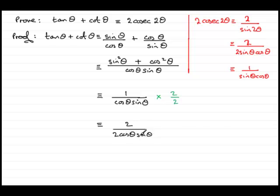Now 2 cos θ sine θ is the same as 2 sine θ cos θ, which is the identity sine 2θ.